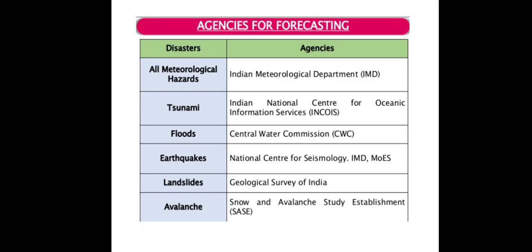Agencies for Forecasting: When a disaster occurs, for all meteorological hazards, the relevant agencies are as follows. For Tsunami: Indian National Centre for Oceanic Information Service. For Floods: Central Water Commission. For Earthquake: National Centre for Seismology, IMD. For Landslides: Geological Survey of India. For Avalanche: Snow and Avalanche Study Establishment.